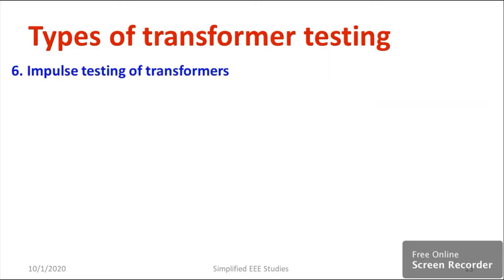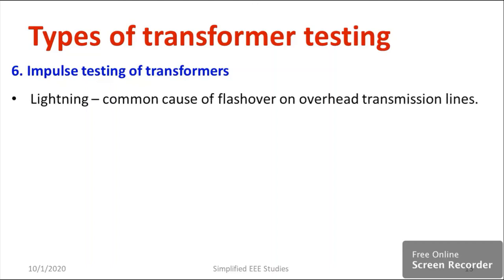Now I would like to discuss impulse testing, one of the most important tests for transformers. As you know, during lightning and thundering, a bulk amount of transient voltage occurs and directly affects the insulation of electrical equipment such as circuit breakers, isolators, and transformers. Transformers are especially severely affected by this kind of transient overvoltage, and most are located in substation yards, so it is very essential to conduct impulse testing.